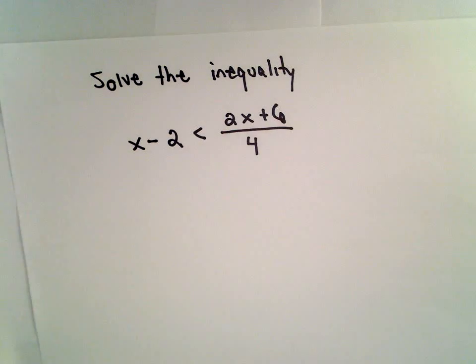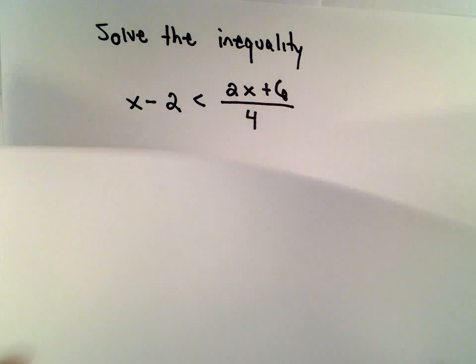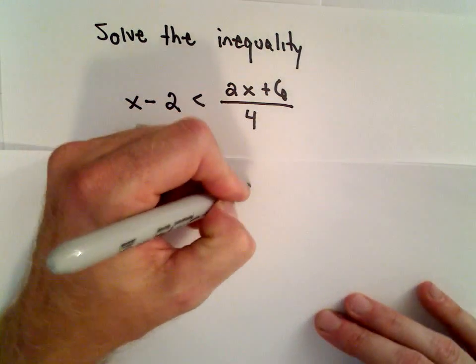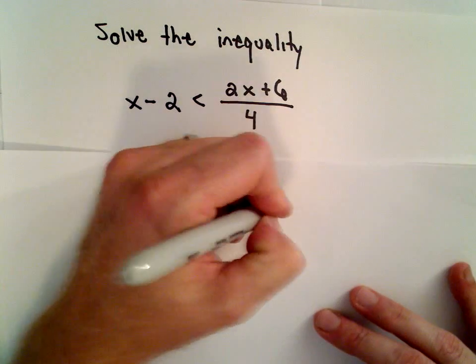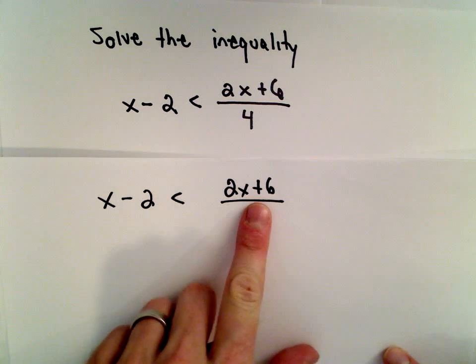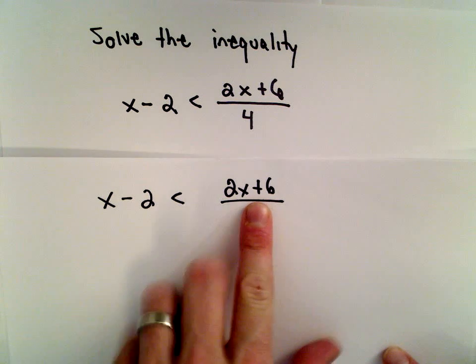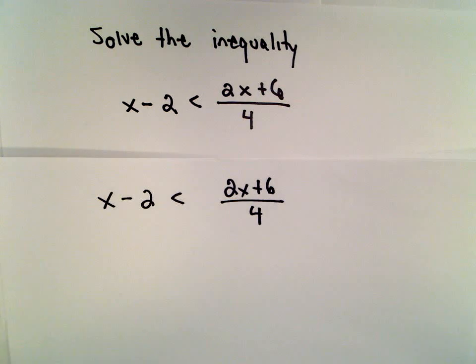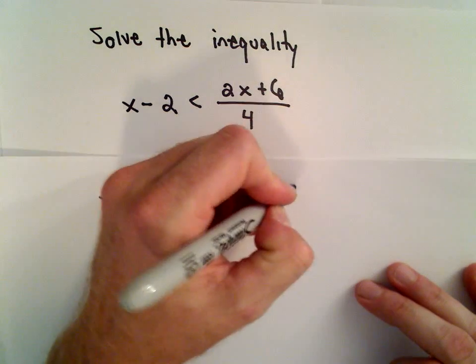So the first thing we said was, let's get rid of this fraction. I've got x minus 2 less than 2x plus 6 divided by 4. Since I'm dividing by 4, that's the thing I want to go away. I wish I just had 2x plus 6 left over. I would feel better in that I'm getting closer to solving the problem.